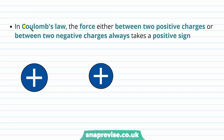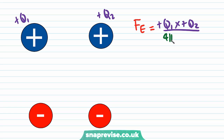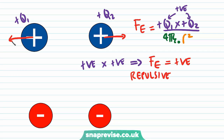The force between two positive charges or between two negative charges always takes a positive sign. For two positive charges, plus q1 and plus q2, Coulomb's law gives plus q1 times plus q2 divided by 4π epsilon 0 times r squared. Multiplying two positive charges gives a positive product, so the overall force is positive. This positive force is repulsive, as it acts to separate the two positive charges.